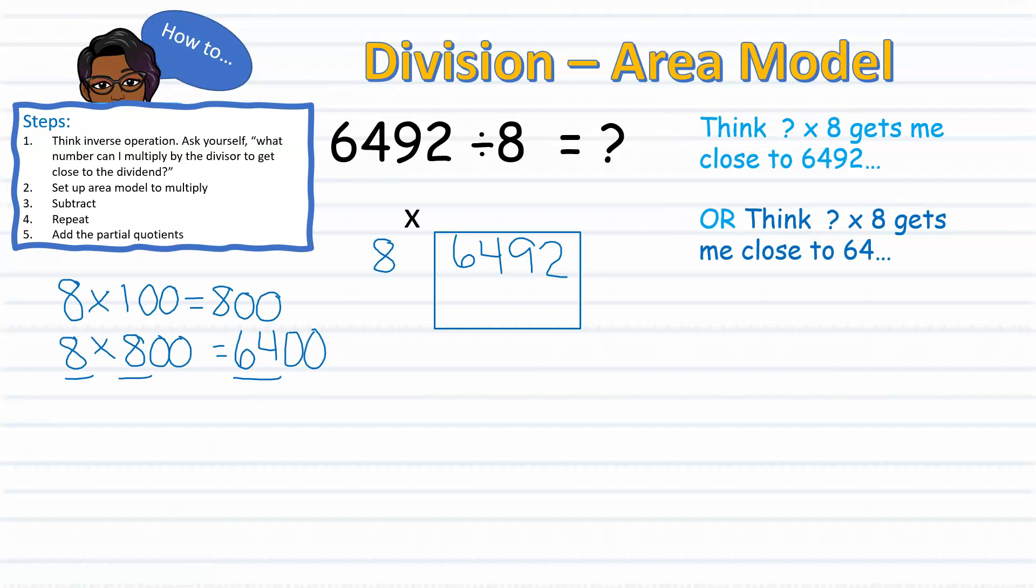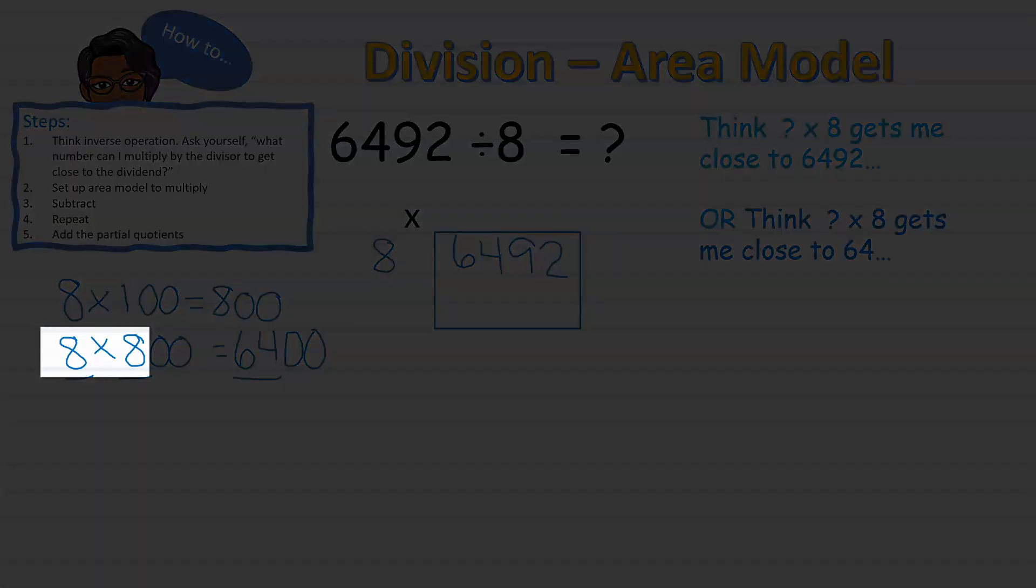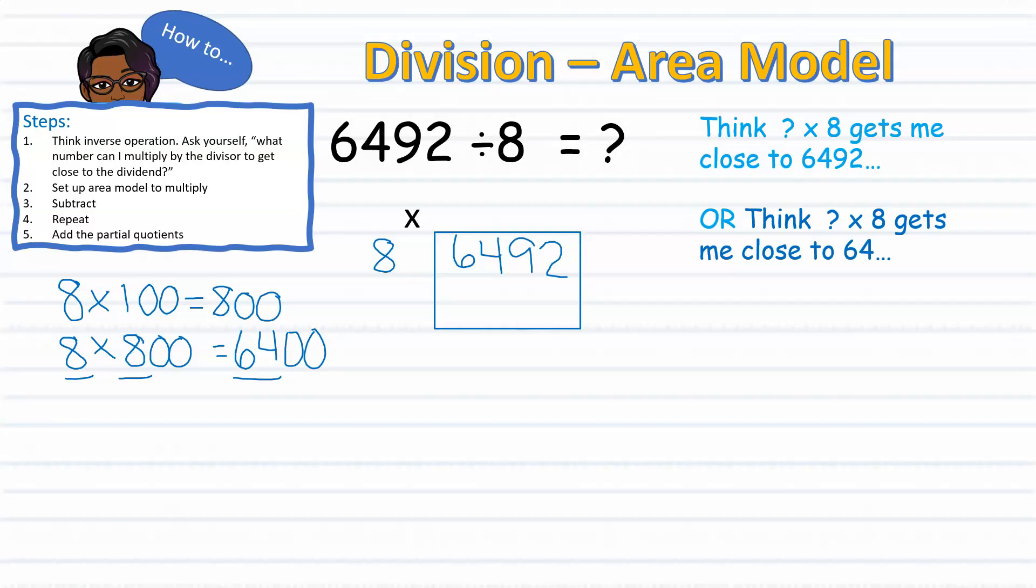Help your child to recognize that when working with larger numbers, it is reasonable to work with larger multiples of 10. So instead of saying 8 times 10, which will only give us 80, we'd want to start with a larger multiple of 10. Let's say 8 times 100, which gives us 800. And as we mentioned before, since we already know that 8 times 8 equals 64, then we can instead multiply 8 times 800, giving us 6,400.